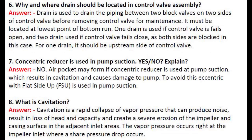Question 6: Why and where should a drain be located in a control valve assembly? Answer: A drain is used to drain the piping between two block valves on both sides of the control valve before removing the control valve for maintenance. It must be located at the lowest point of the bottom run. One drain is used if the control valve fails open, and two drains are used if the control valve fails closed, as both sides are blocked in that case. For one drain, it should be on the upstream side of the control valve.